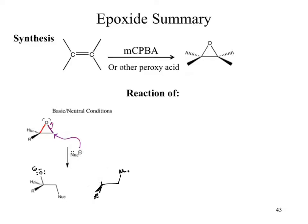After we've done our nucleophilic attack, do we have a final product? What's wrong with it? There's a charge on the oxygen. So we have to add a hydrogen. Typically it's added in a second step — maybe water, or more typically you'll see it added as H+. And we'd end up with our final answer where we have the alcohol. Why are we adding it as a second step?